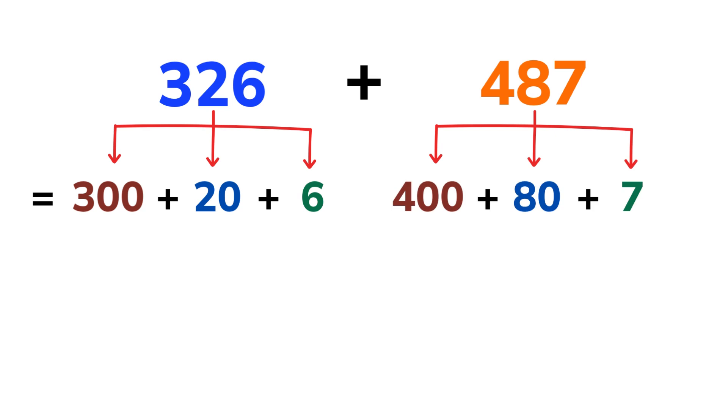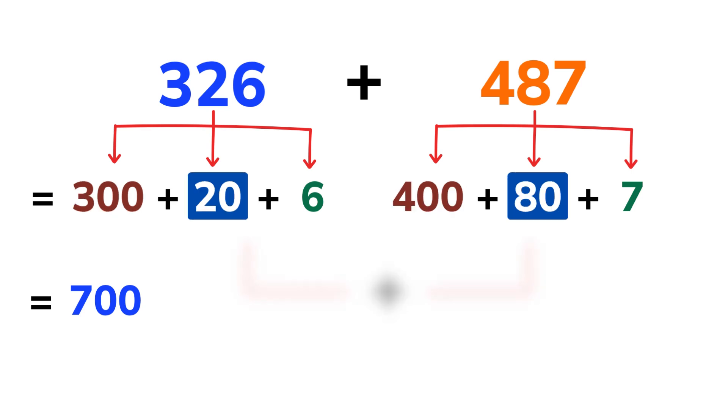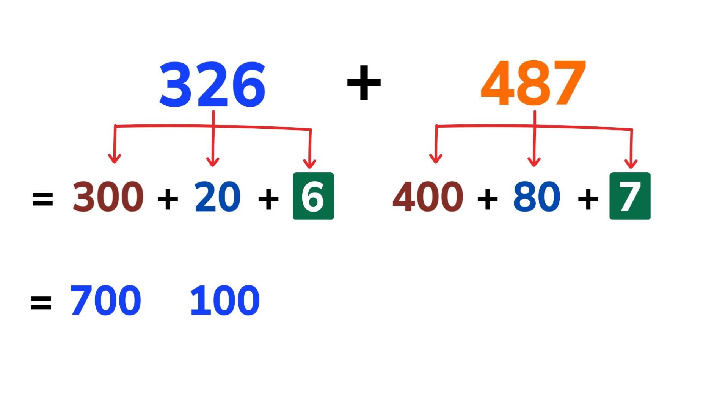Now let's add each part one step at a time. First, the hundreds. 300 plus 400 equals 700. Next, the tens. 20 plus 80 equals 100. Then the ones. 6 plus 7 equals 13.